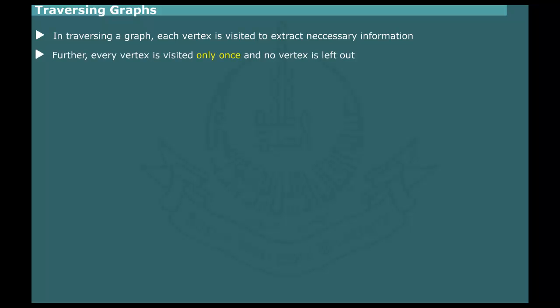Traversing Graphs. In traversing a graph, we visit every vertex to extract information contained in vertices and edges. It is ensured that each vertex is visited only once and that no vertex is left out.